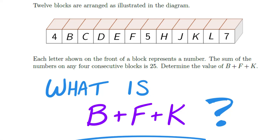Hey everybody, we're here with another contest question. So this one came across my plate. Twelve blocks are arranged as illustrated in the diagram, so you can see it up top. Each letter shown on the front of a block represents a number. The sum of the numbers of any four consecutive blocks is 25. And then we need to determine the value of B plus F plus K. Okay, let's jump in.